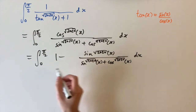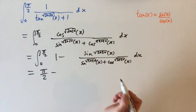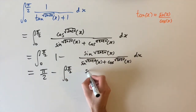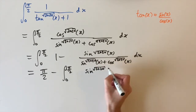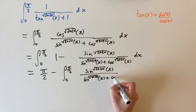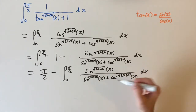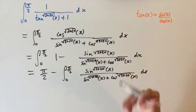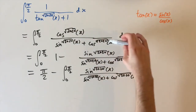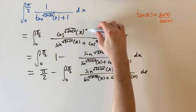We can use linearity to split these two terms. The integral of one between these limits is just pi over two. Then we subtract this other integral: between zero and pi over two of sine to the power of square root of 2020 of x, over sine to the square root of 2020 plus cosine to the square root of 2020 of x dx. Our strategy was to rewrite our integral in terms of itself — the only difference between this new integral and the original is that we have sine instead of cosine on the top.